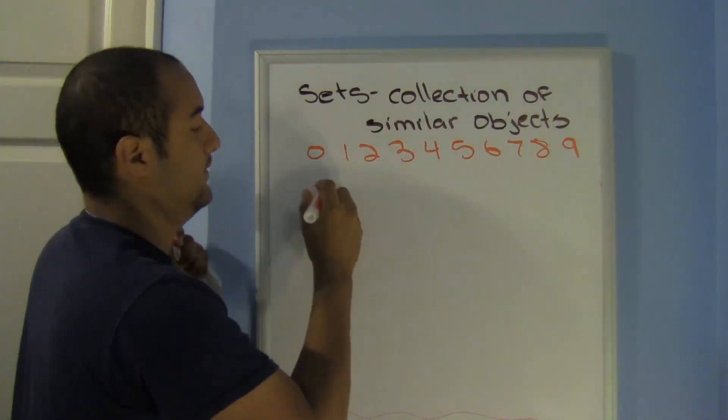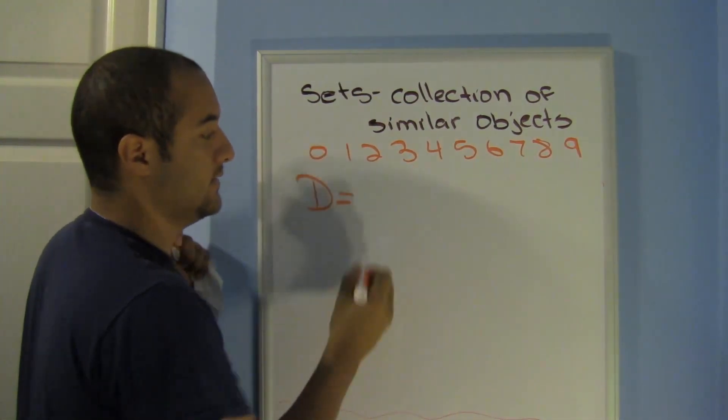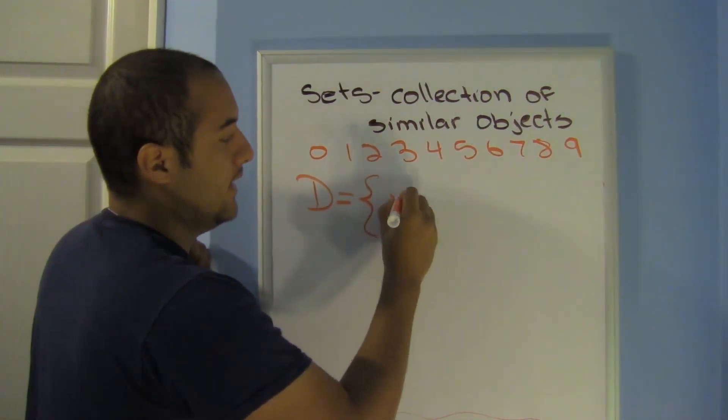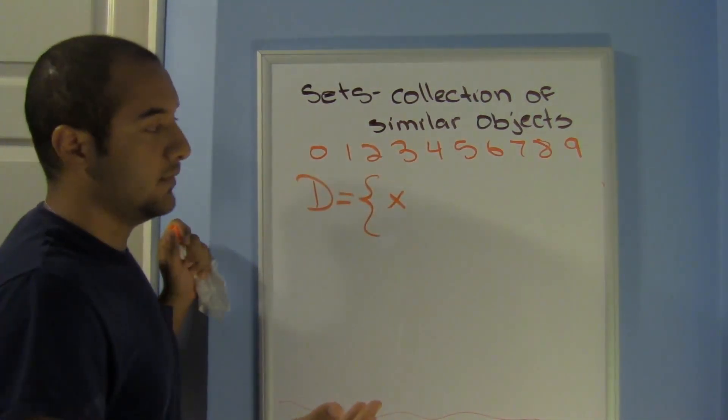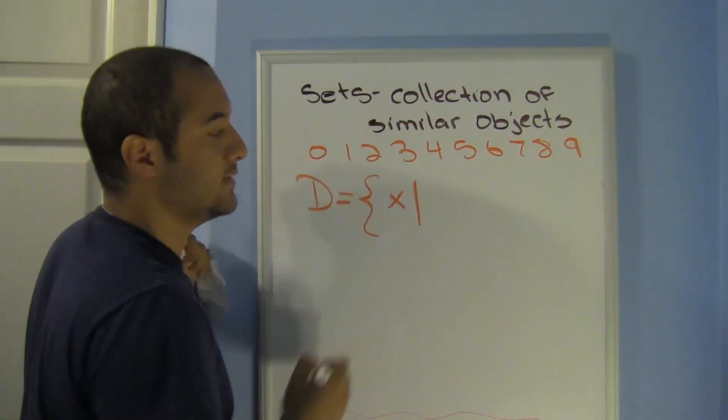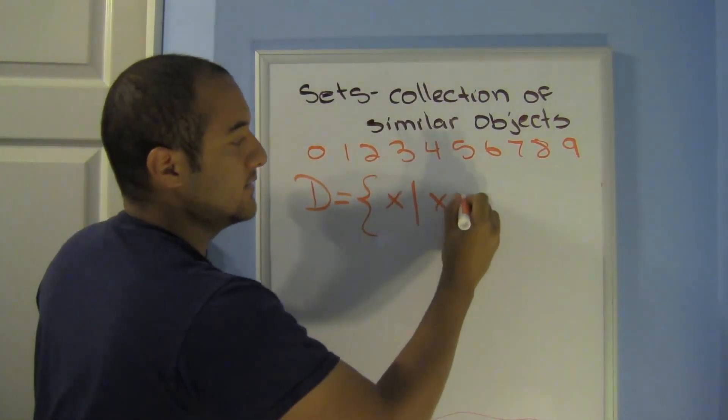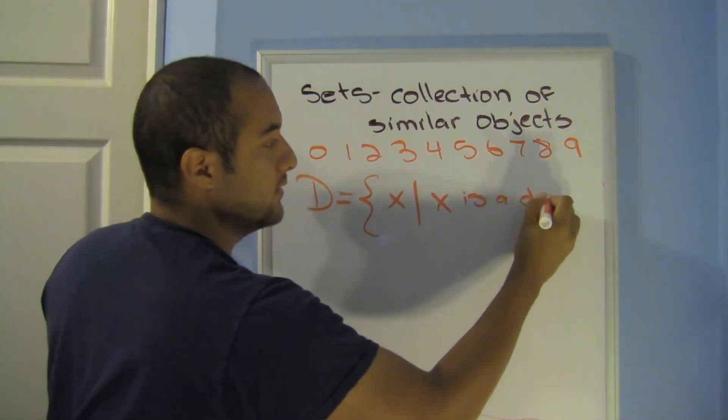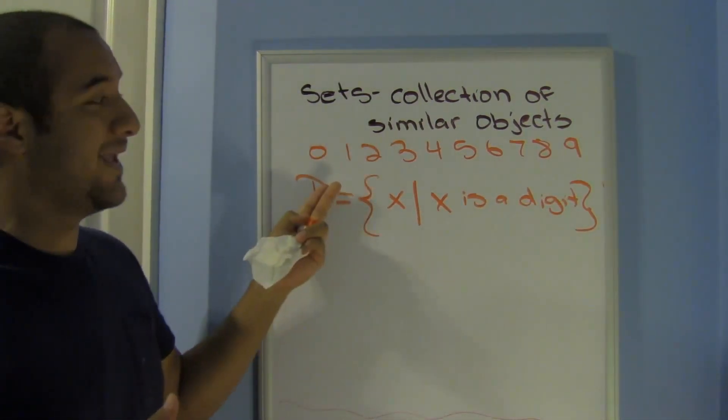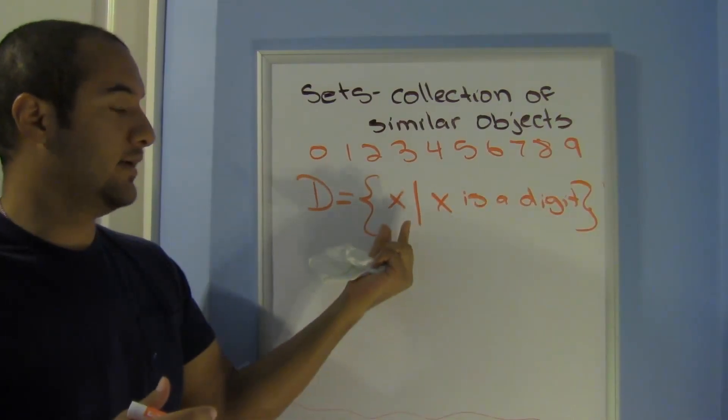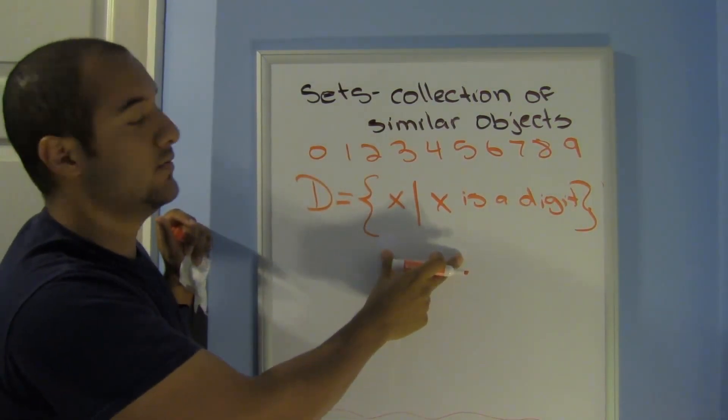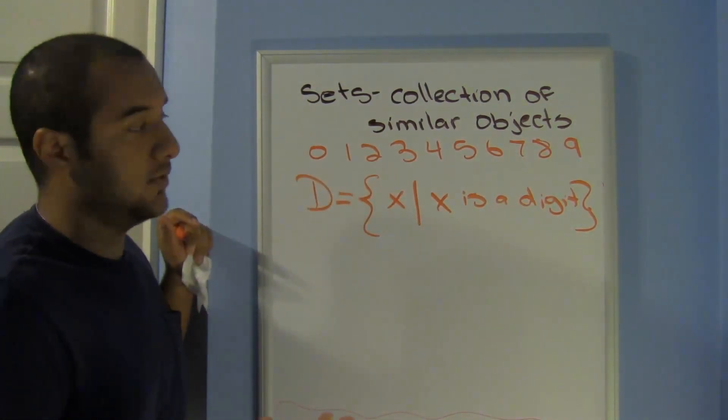I could have also done this. I could have said D is the set X. So I'm just saying I'm holding the place of the variable. The set X such that, this means such that X is a digit. So instead of making a roster, writing everything out, I could just go ahead and say it like this. And they mean the exact same thing. This is the one that you're most likely going to be using in your college algebra class.